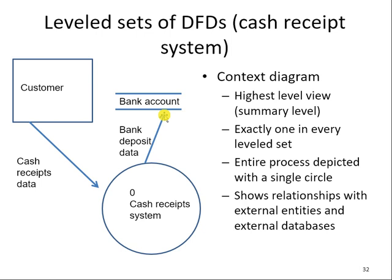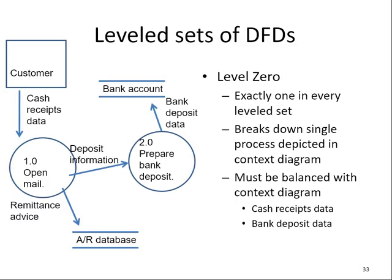This is the highest level view of the cash receipt system — very clear, but it lacks much detail. In the next level, level zero, we show more details. It is called level zero because the processes are numbered 1.0 and 2.0. It breaks down the cash receipt process into two processes: 1.0 is open mail, and 2.0 is prepare bank deposits. Then we show the data flow.